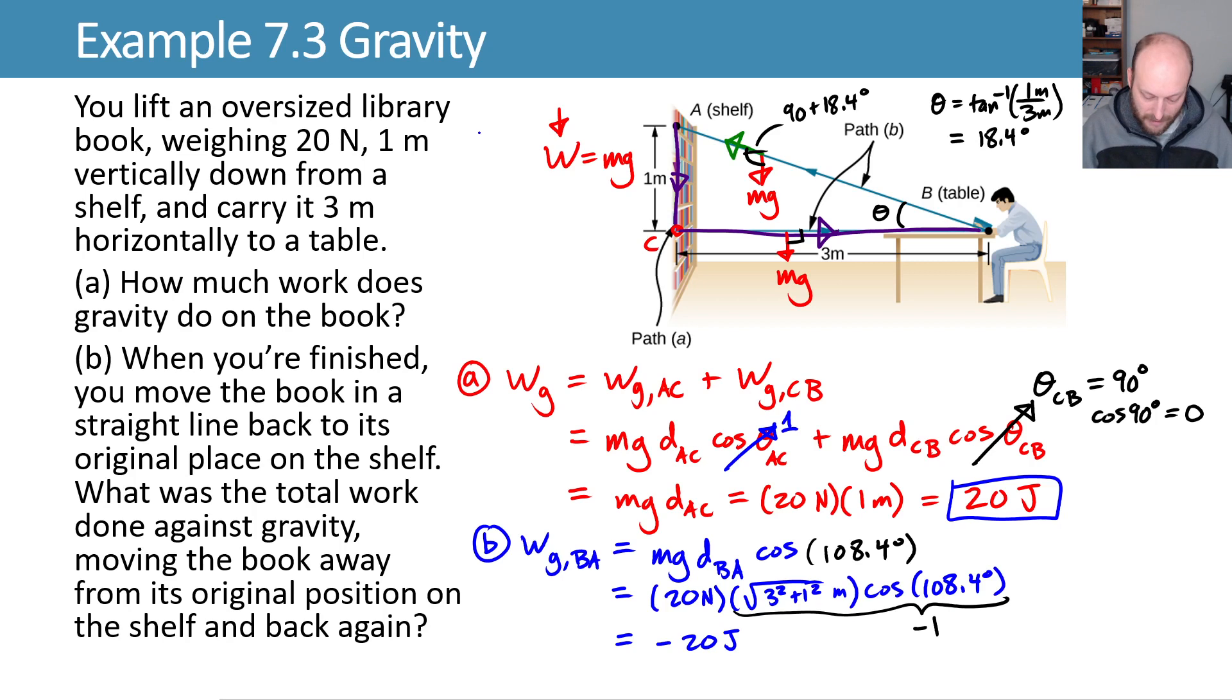We can now combine these and say that the network done by gravity is 20 joules minus 20 joules. We just add up those two legs of the journey so we get 0 joules as our network. That's the work done by gravity, that means that's also the work done against gravity.